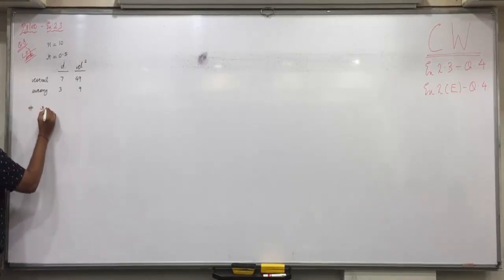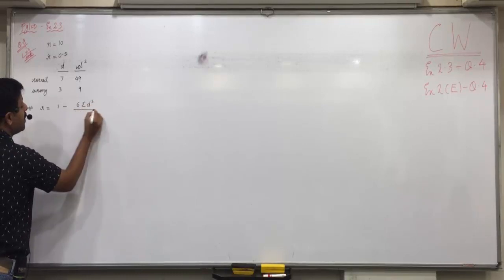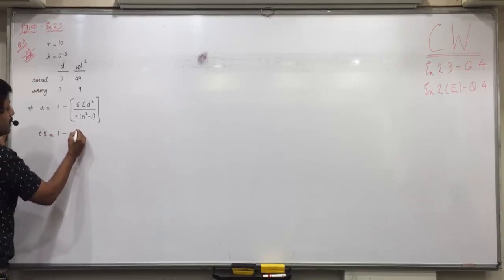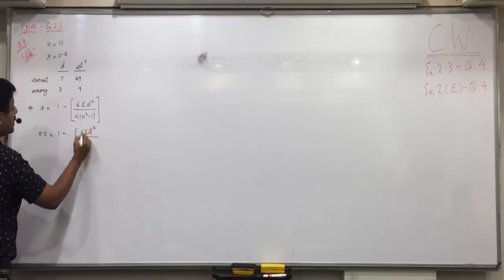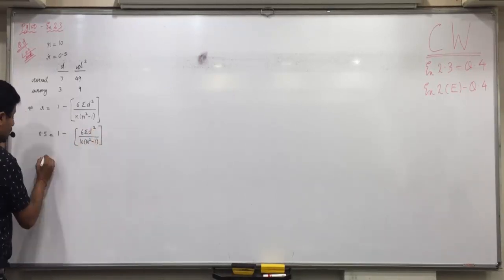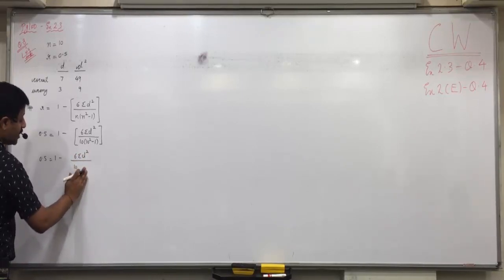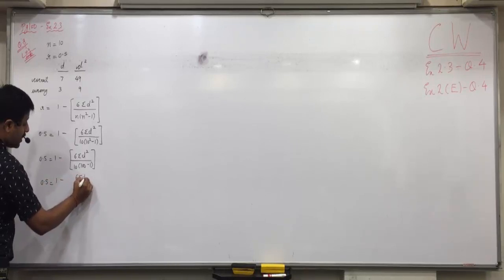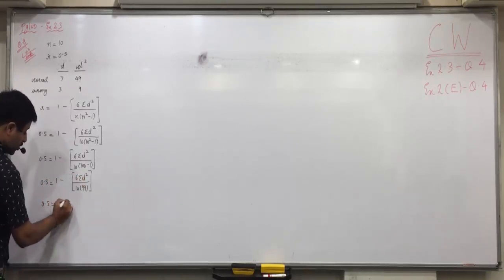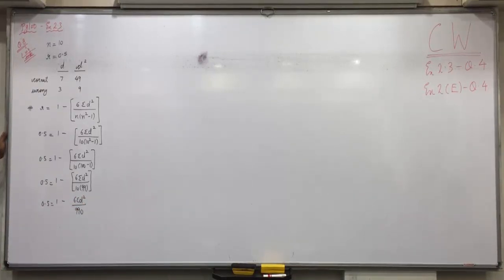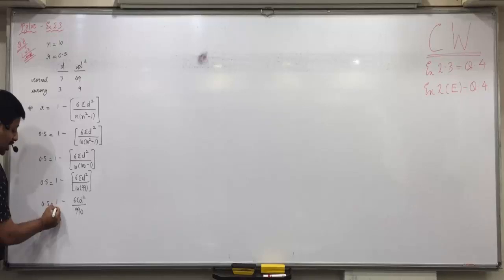So, look at it all. First, R is equal to 1 minus 6 sigma D square upon n into n square minus 1. 0.5 is equal to 1 minus 6 sigma D square upon 10 into 100 minus 1. 0.5 is equal to 1 minus 6 sigma D square upon 10 into 99. That is 990. Any doubts up till here?